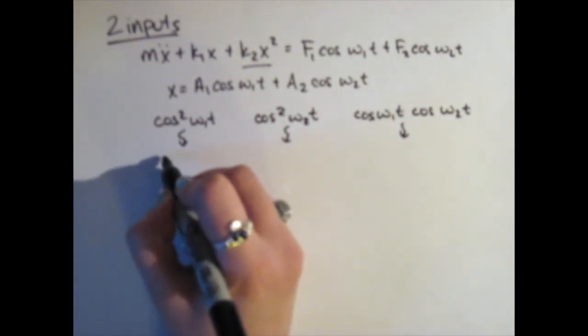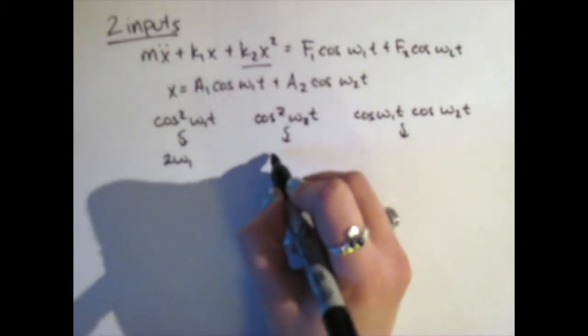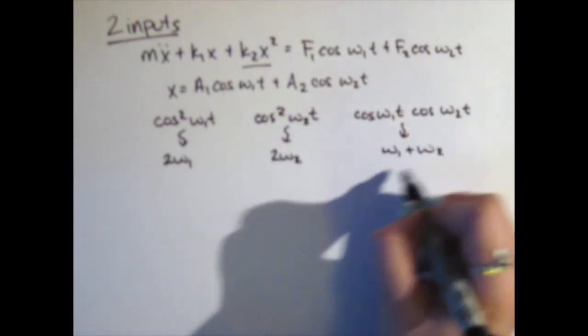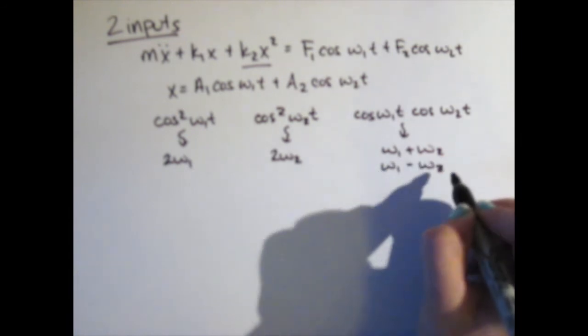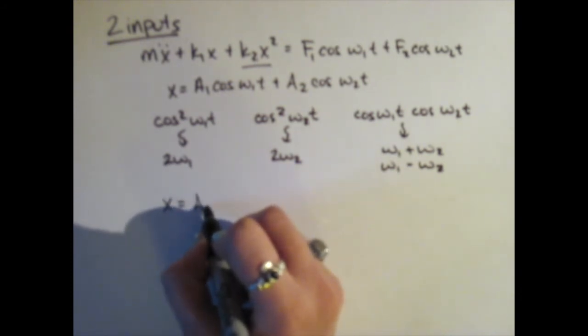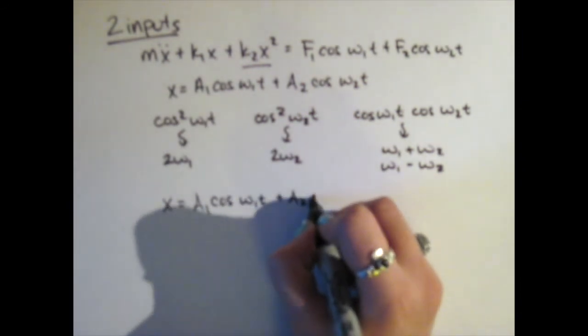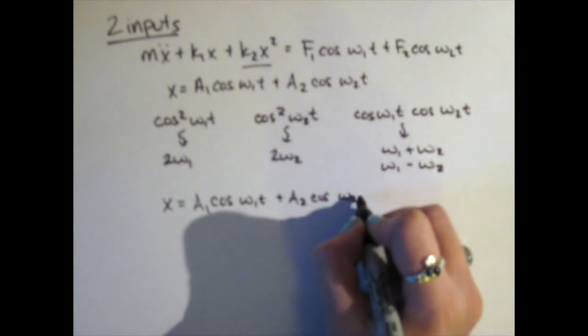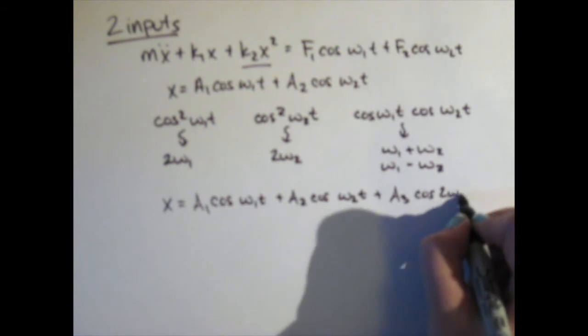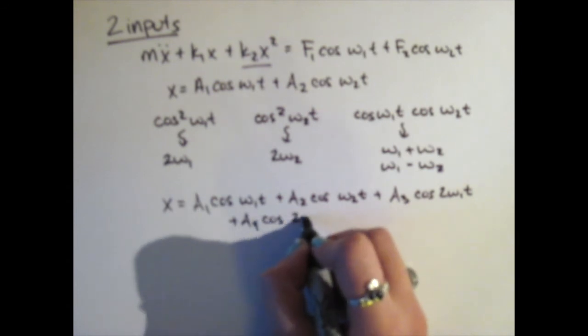Each of these gives us harmonics. This first term gives us a 2 omega 1, the second term gives us a 2 omega 2, and this last term gives us an omega 1 plus omega 2, and omega 1 minus omega 2. Our second guess is going to be x equals A1 cosine omega 1 T plus A2 cosine omega 2 T plus A3 cosine 2 omega 1 T plus A4 cosine 2 omega 2 T.